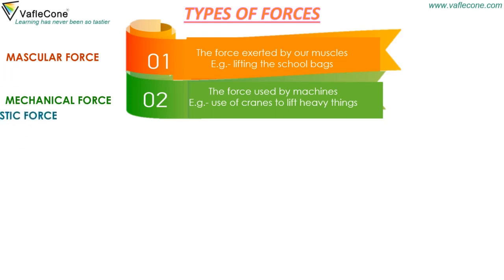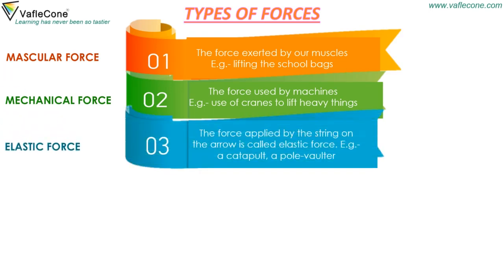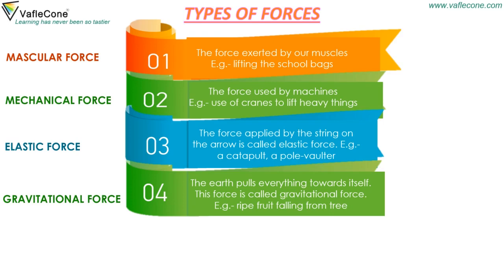Elastic force is the force applied by a string on an arrow. For example, a catapult or a pole vaulter. Gravitational force: the earth pulls everything towards itself. This force is called gravitational force. For example, ripe fruit falling from a tree.